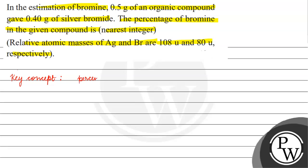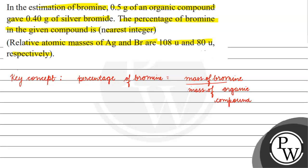The key concept for this question is: percentage of bromine will be equal to mass of bromine divided by mass of organic compound, into 100. We are given that 0.5 gram of organic compound gives us 0.40 gram of silver bromide.